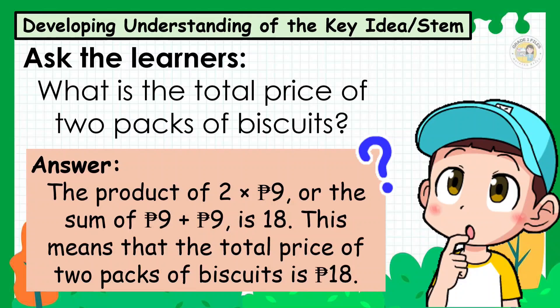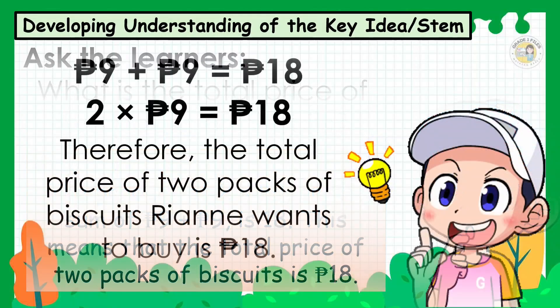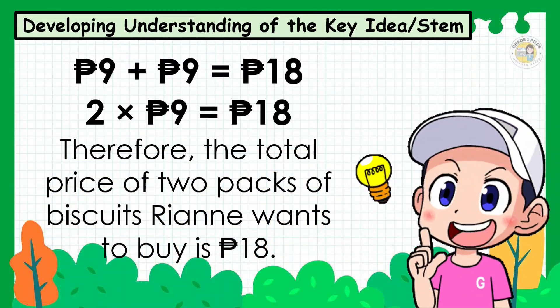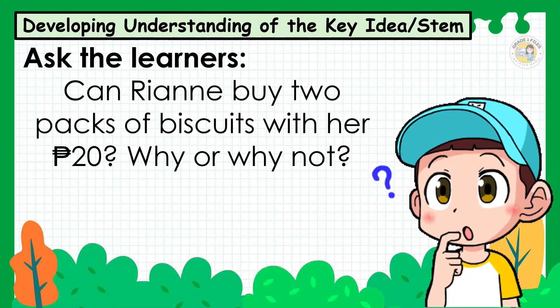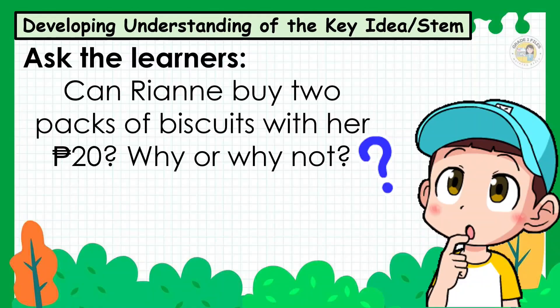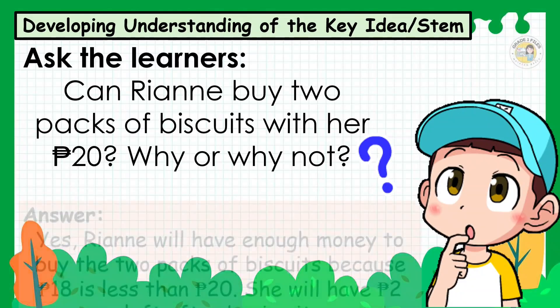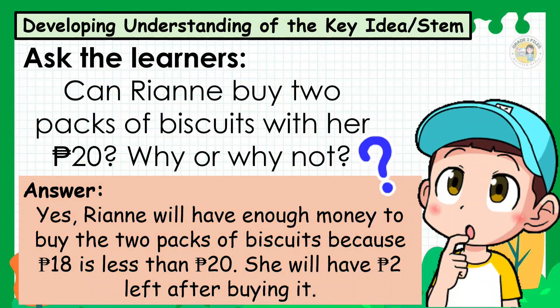The total price of 2 packs of biscuits is 18 pesos. Therefore, the total price of 2 packs of biscuits Rian wants to buy is 18 pesos. Can Rian buy 2 packs with her 20 pesos? Yes, Rian will have enough money because 18 pesos is less than 20 pesos. She will have 2 pesos left after buying them.